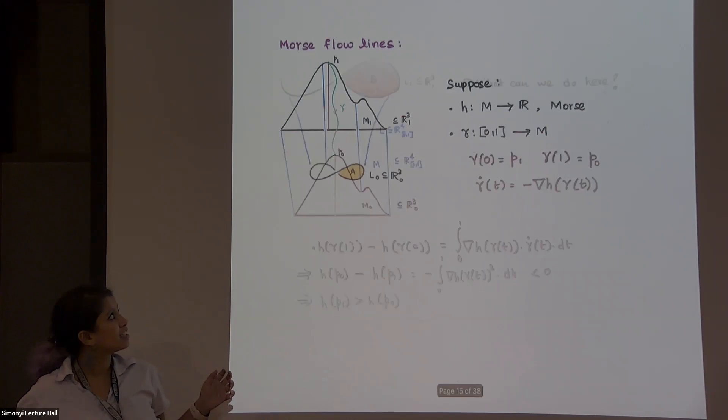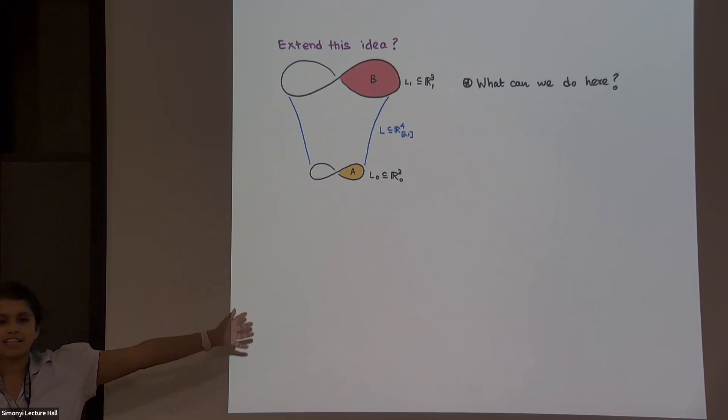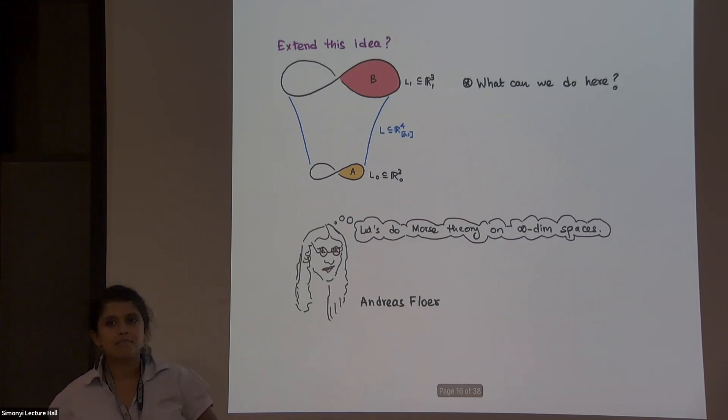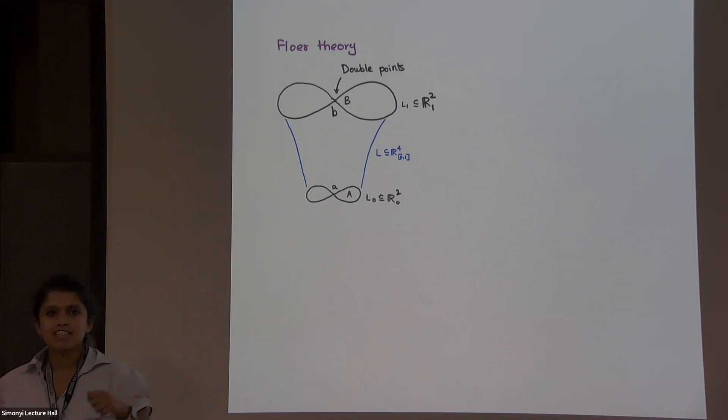And now, the question is, well, I told you about this thing that I'm actually interested in. Can we do things here, which looks similar? Sometime in the 90s, this genius called Andreas Floer had the idea that he's going to do Morse functions on infinite dimensional spaces. I'm going to talk about that now. So that's Floer Theory.